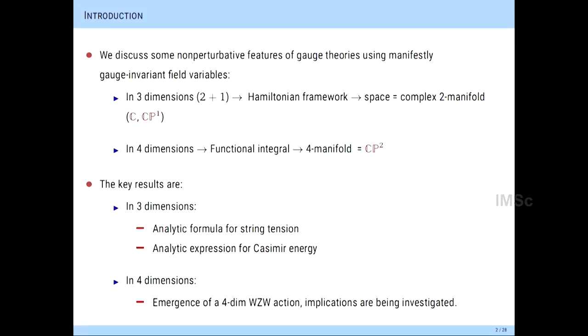We're going to introduce gauge invariant field variables, which makes the factoring out of gauge transformations fairly simple and straightforward. In three dimensions — two space and time — it will be done in a Hamiltonian framework. The advantage is that the spatial manifold can be treated as a complex manifold. In four dimensions, to use similar techniques, one needs to consider the functional integral, and I will focus on the four-manifold CP2, the complex projective space, which is the simplest case one can analyze.